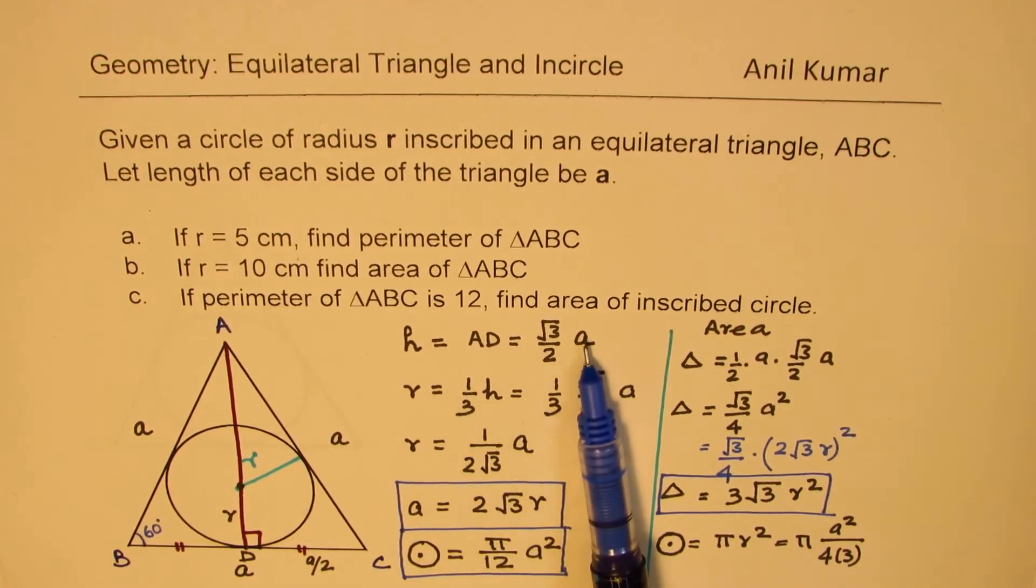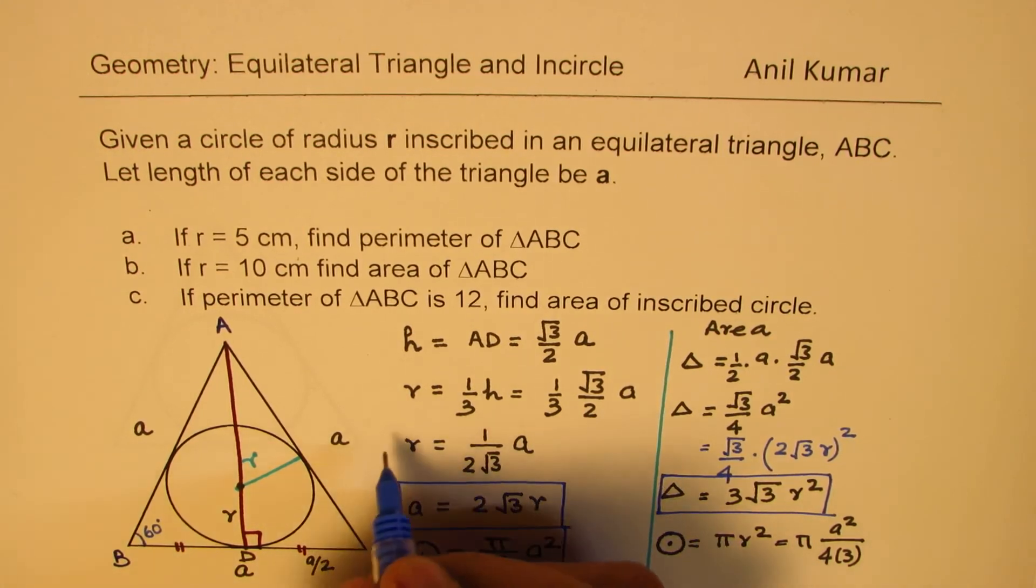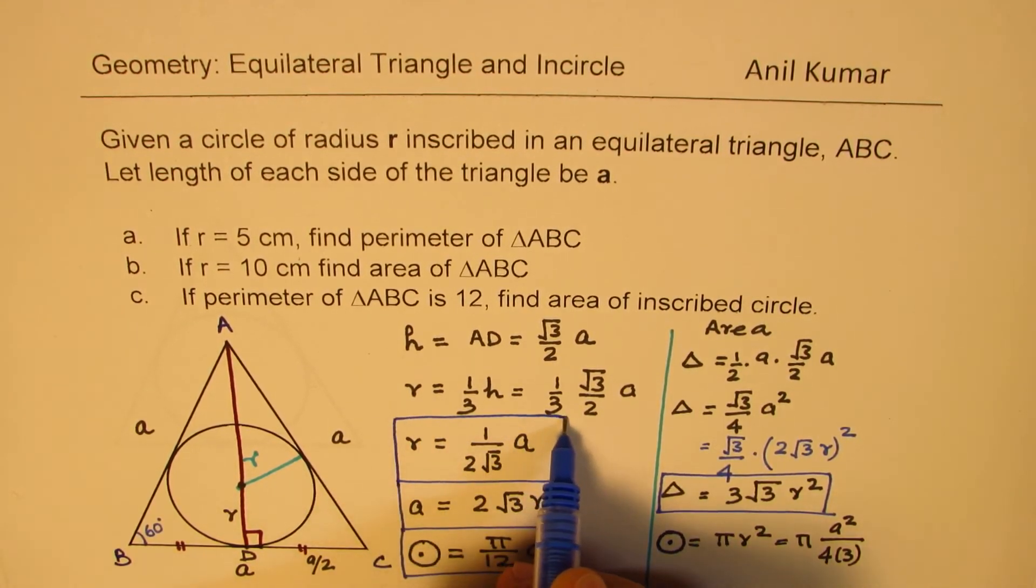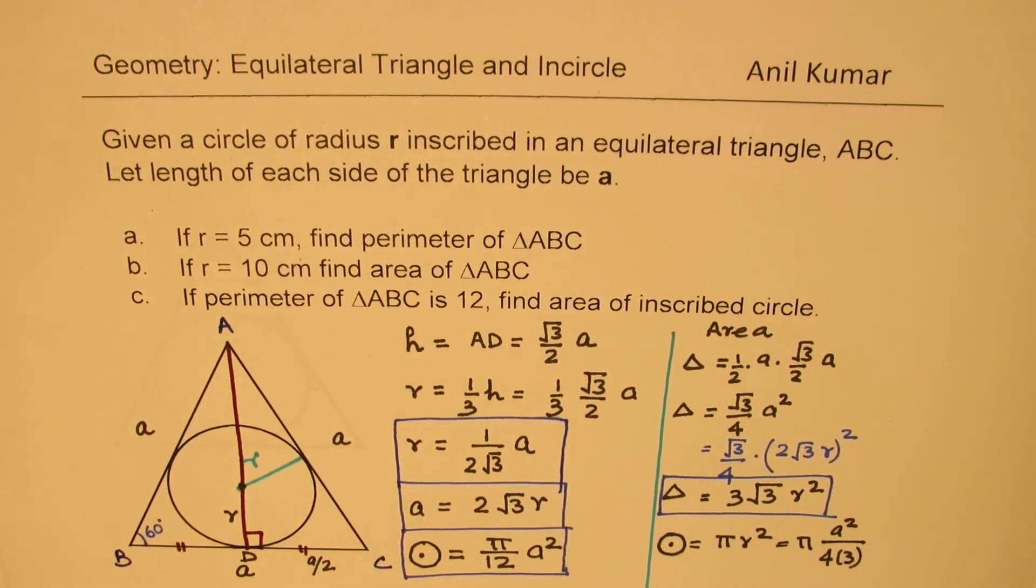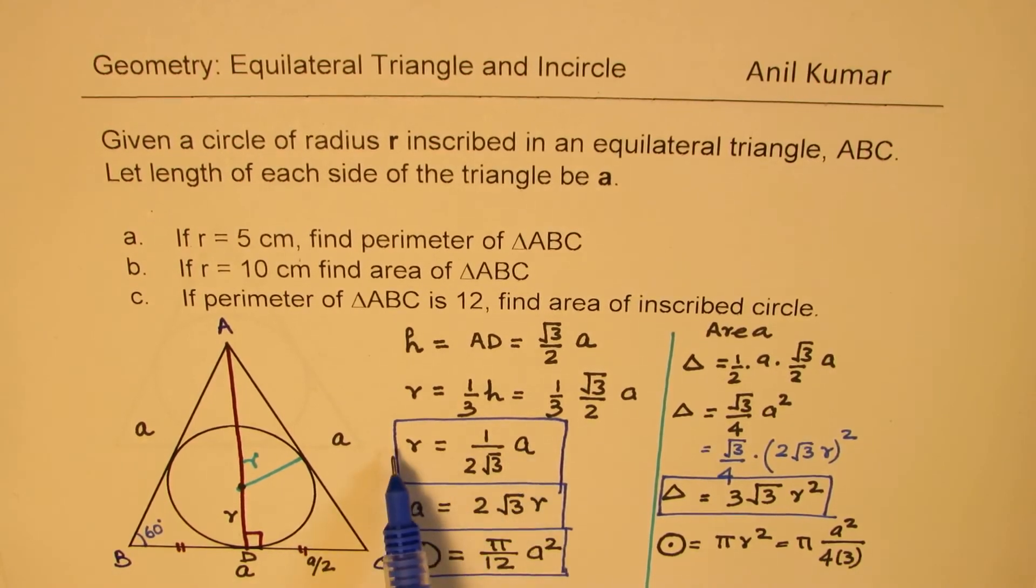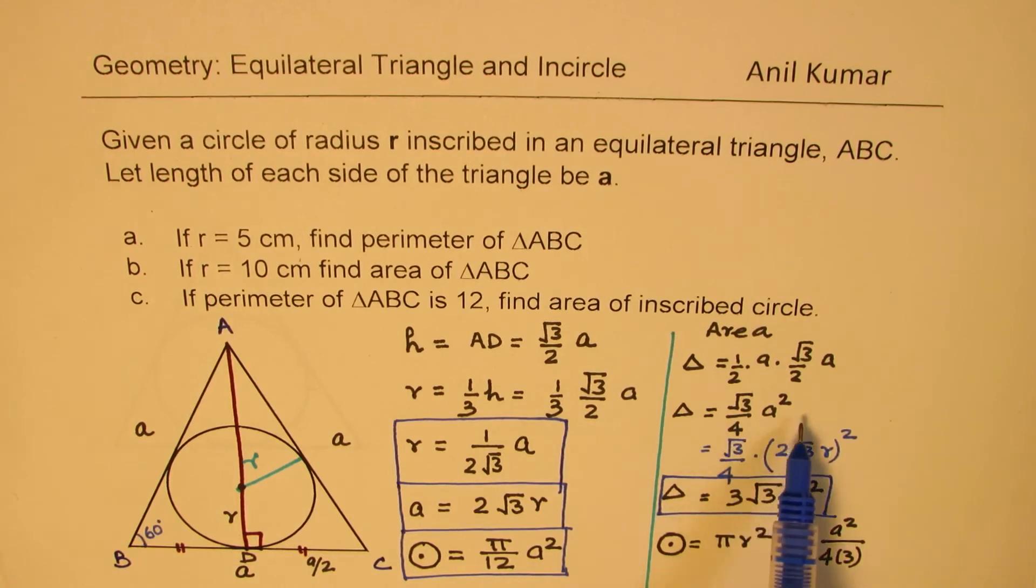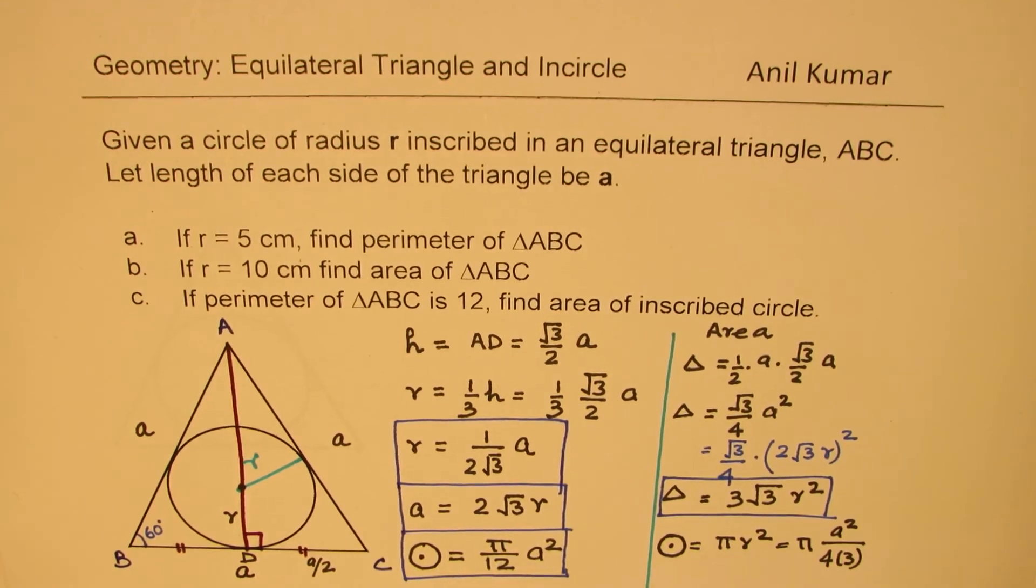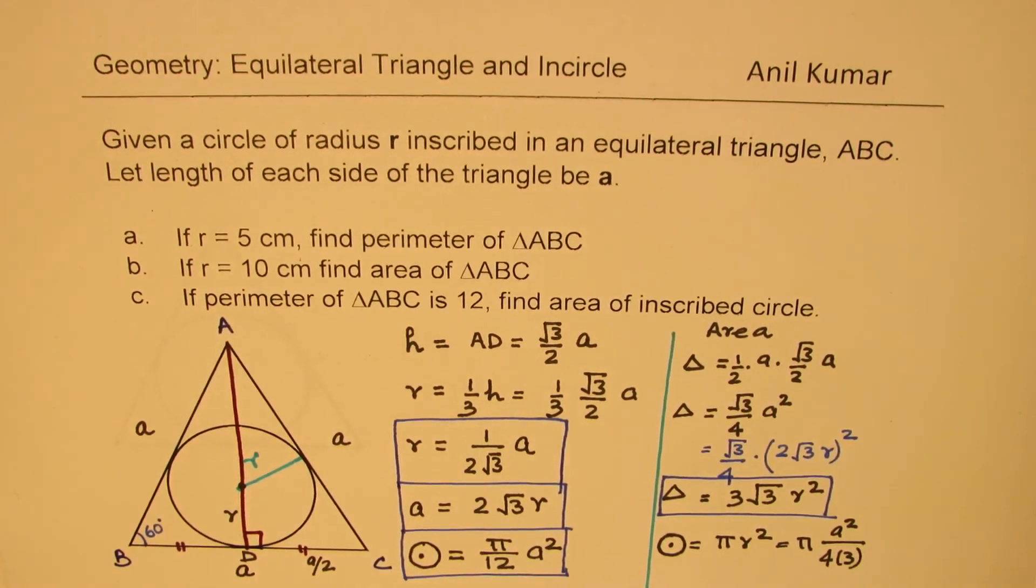Key formulas: r = a/(2√3), which can be rearranged to find a in terms of r. Area of the triangle is half base times height, or in terms of radius, 3√3·r². The area of the inscribed circle is (π/12)a², with derivations shown above.